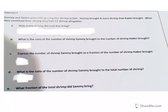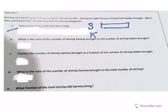Okay, let's look at another problem here. It says, in exercise one, Sammy and Caden went fishing using live shrimp as bait. Sammy brought eight more shrimp than Caden brought. When they combined their shrimp, they had 32 shrimp altogether. So they brought all this shrimp. They had 32 total shrimp. Sammy brought eight more than Caden, though. So Sammy had more. How many shrimp did each boy bring for part A? I don't know, but we can figure it out.